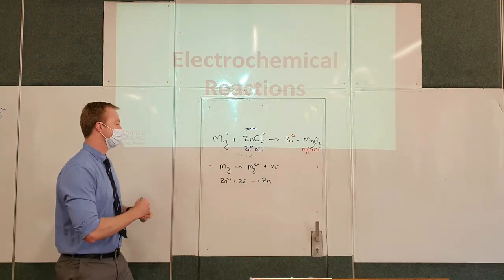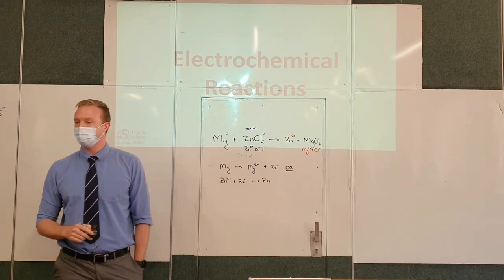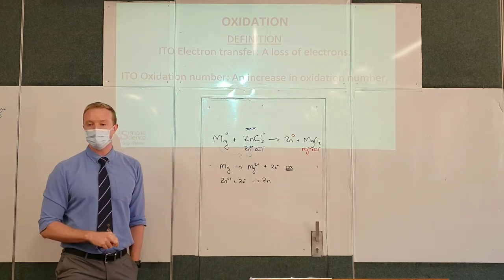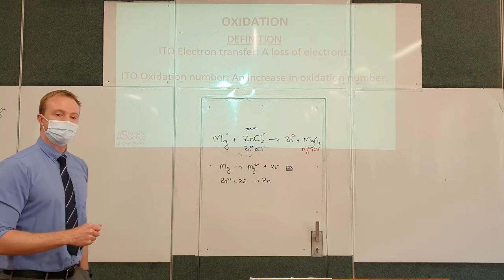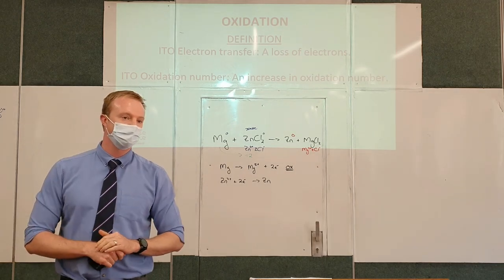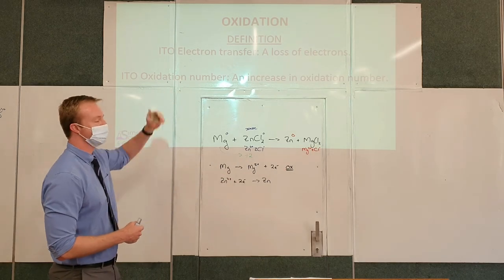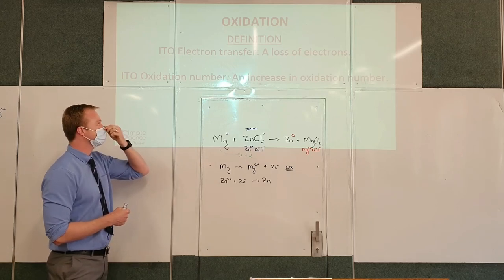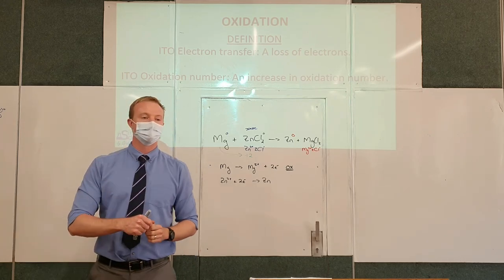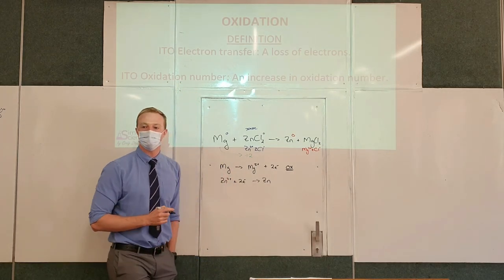We name these half reactions. The one that gives away electrons is called an oxidation half reaction. It can be defined in terms of oxidation number, but more commonly in terms of electron transfer: oxidation is a loss of electrons. Whenever something loses electrons, it is oxidized or undergoes oxidation. In this case, we say that magnesium was oxidized.